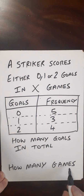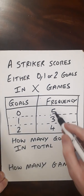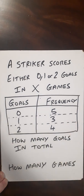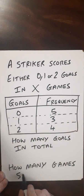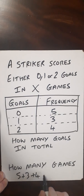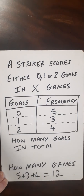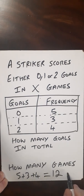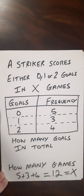How many games they played in is quite simply the total of the frequencies, so that would be 5 plus 3 plus 4, that's just going to be 12. So that's this part taken care of, and that gives us our x value.